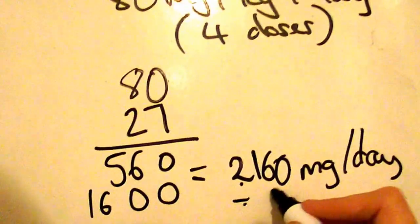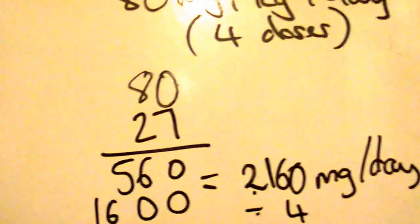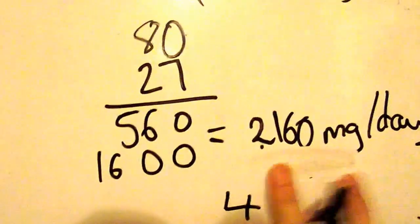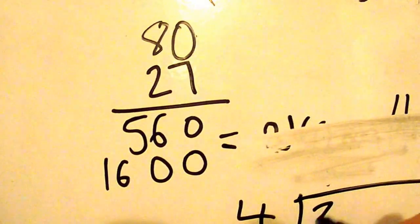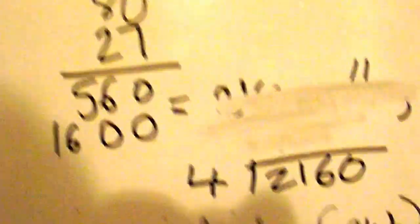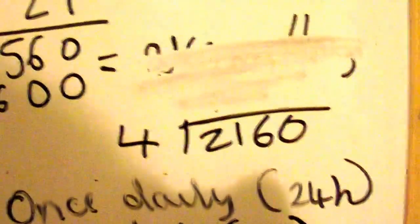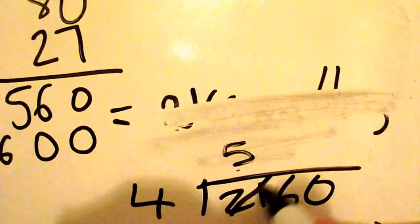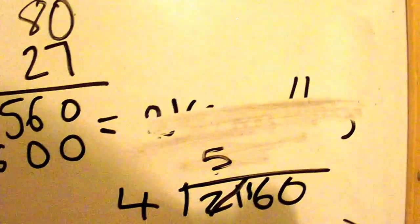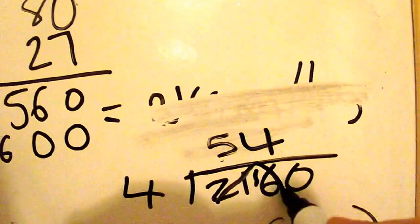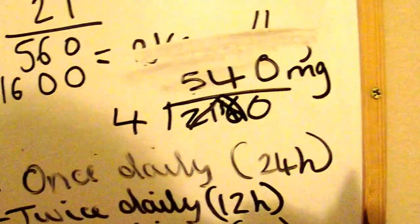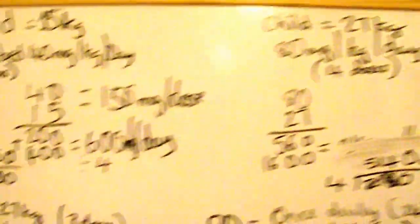But because you've got 4 doses, again, you're dividing this by 4. So again, I'm going to draw in my box 4 divided by 2,160. So you can do here how many 4s go into 21 and you've got 5, remainder 1. Then how many 4s go into 16? You know that's 4, and then you've got the remainder 0. So here you've got 540 milligrams per dose.